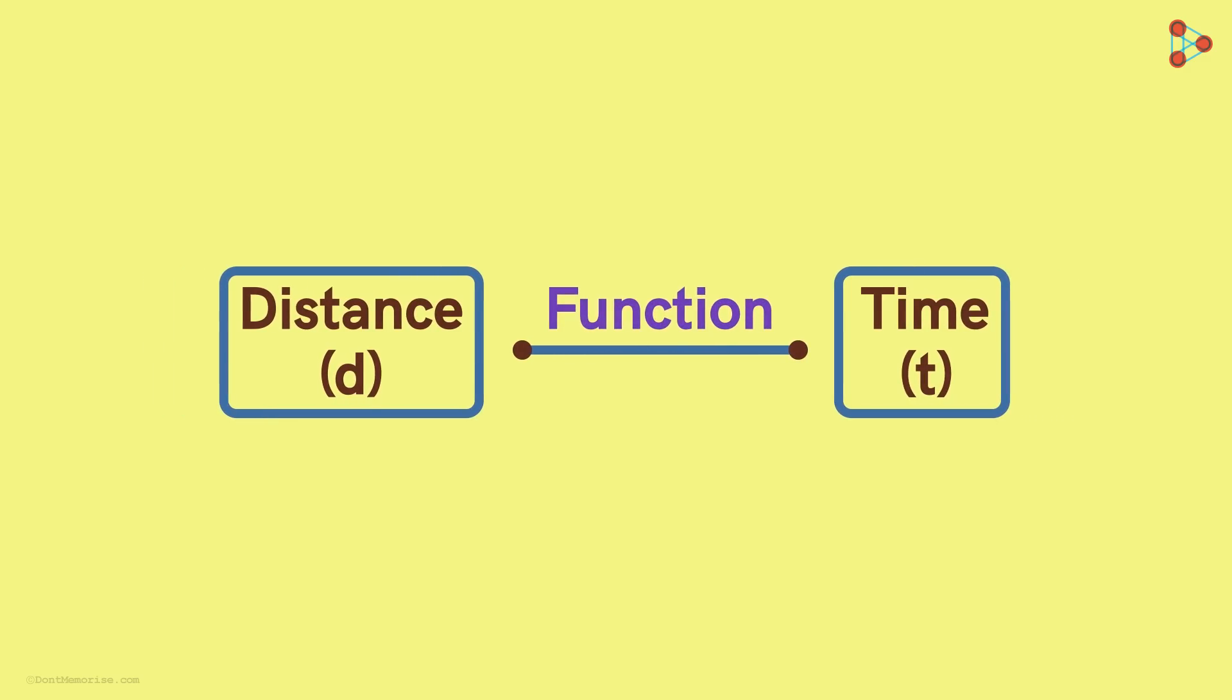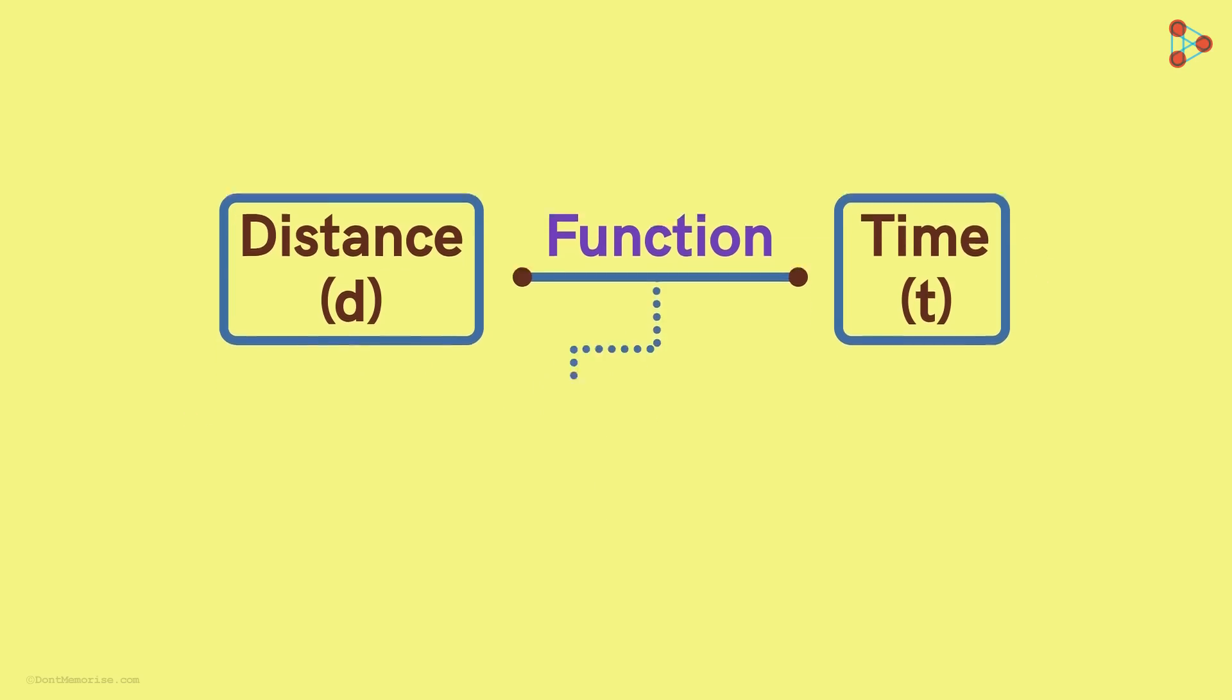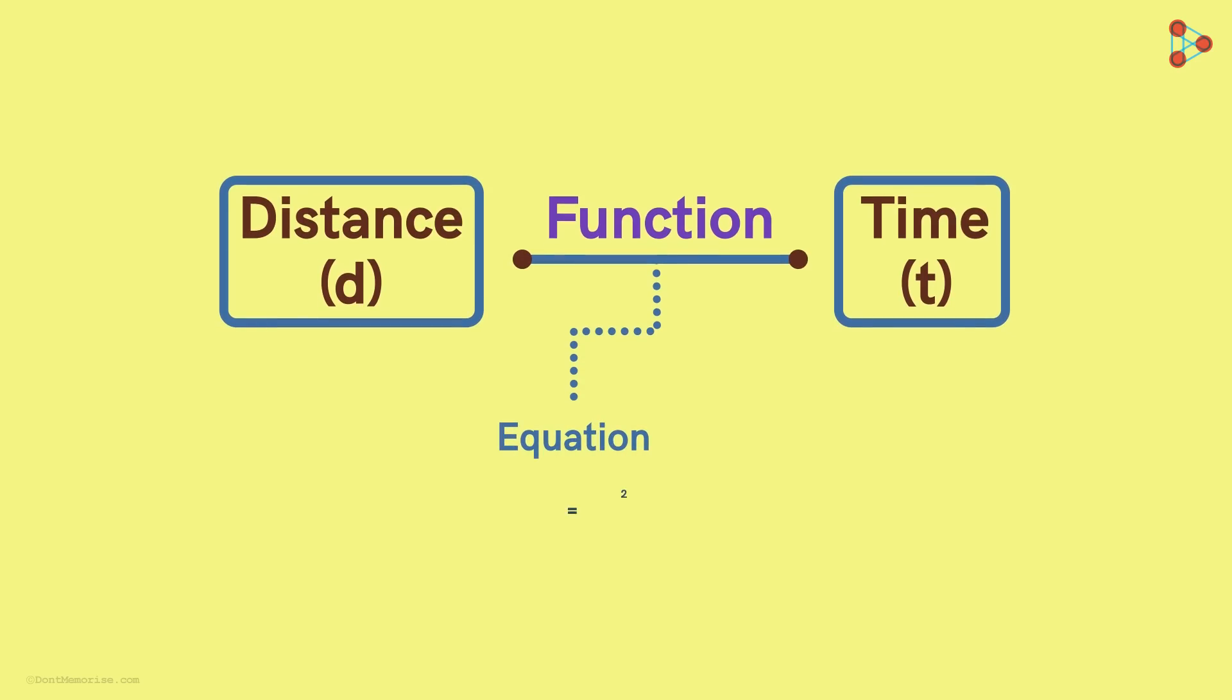So the distance travelled by an object is a function of the time elapsed. And how the two variables are literally related is represented by an equation as we saw earlier. This equation tells us one specific relation between the time and the distance. It is just an example that we took.